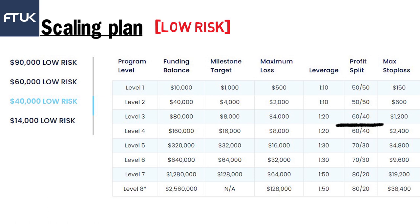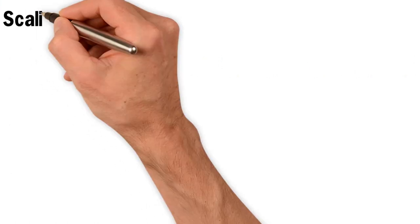In Lorix mode, a maximum stop loss is mandatory — you cannot risk more than 1.5% of the account size in one trade. When you move from level one to level two, they increase your account size by four times (quadruple). However, after level two, whenever you achieve the milestone target they double your account size each time.